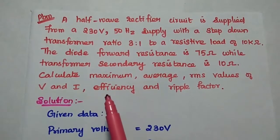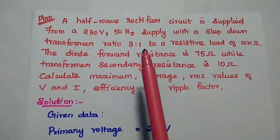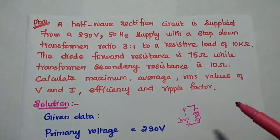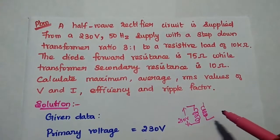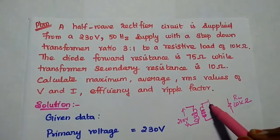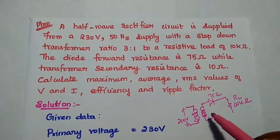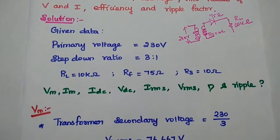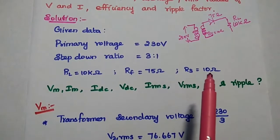In the solution, the given data is: primary winding voltage = 230 V, step-down ratio = 3:1, load resistance RL = 10 kΩ, diode forward resistance RF = 75 Ω, and transformer secondary resistance RS = 10 Ω.